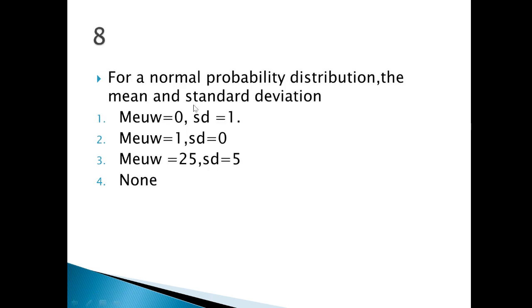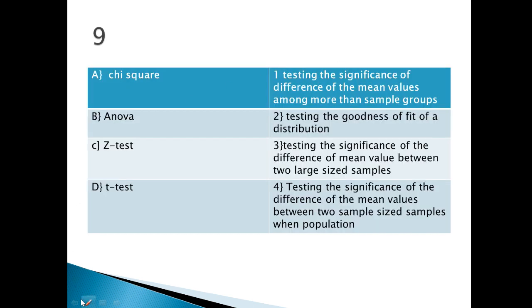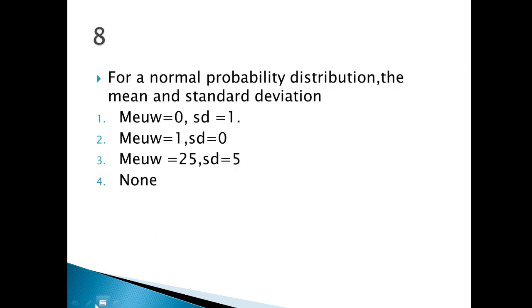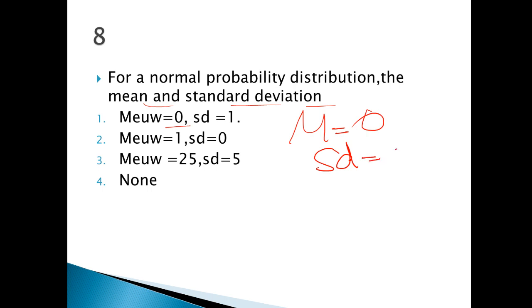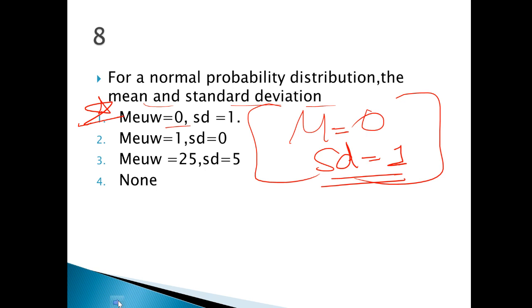Next is for a normal probability distribution — sorry guys. For a normal probability distribution, the mean and standard deviation to remember: mu is equal to zero and standard deviation is equal to one. These are the key points that are very important to revise.